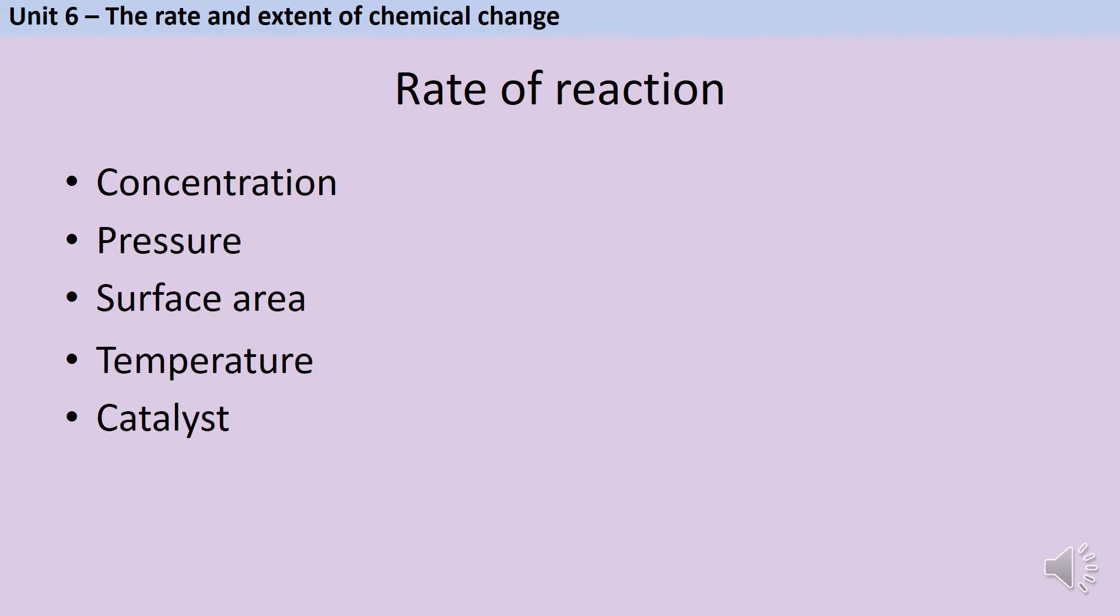There are five different factors that we can manipulate in order to increase the rate of reaction. Concentration which applies to solutions, pressure which applies to reactions involving gases, surface area which applies to reactions involving solids, and then temperature and catalysts which apply to all chemical reactions. You need to remember this list of five as you may be asked to suggest a way to speed up a particular chemical reaction.